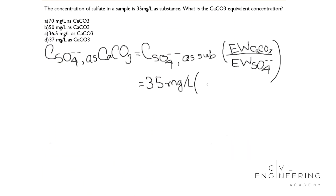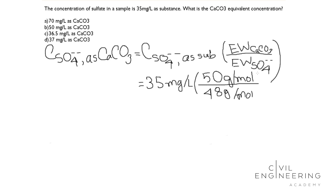Now we know the equivalent weight of calcium carbonate is 50 grams per mole, divided by the equivalent weight of sulphate, which is 48 grams per mole. After calculation, I got the value 36.48 mg per liter. The units of grams per mole cancel out.